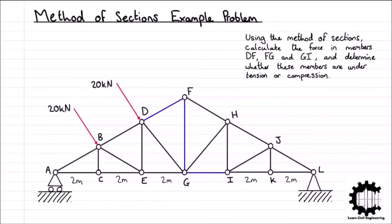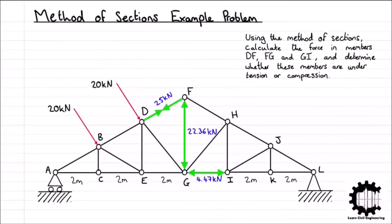Going back to our original diagram, we can conclude: the force in member DF is 25kN in compression, the force in member FG is 22.36kN in tension, and the force in member GI is 4.47kN in tension. If you attempted this question yourself and got the correct answers, well done. Subscribe to the channel and leave a like to get notified when the next video is released. If you have any remaining questions or would like me to cover a specific topic, please leave them in the comments below.